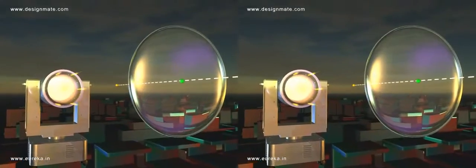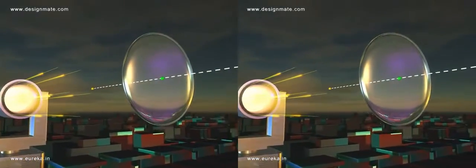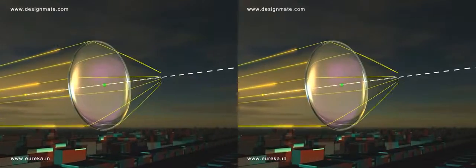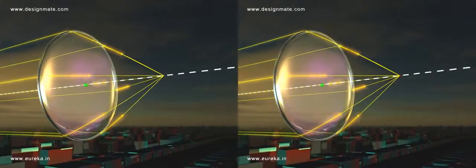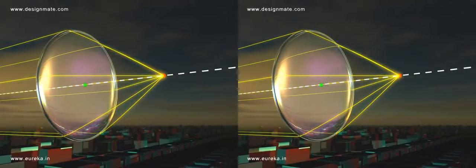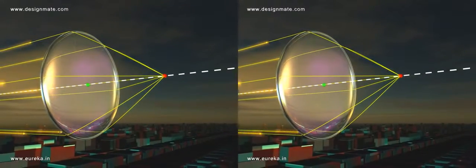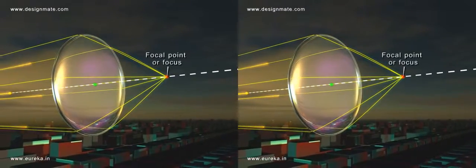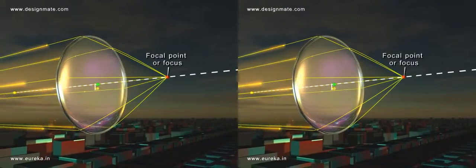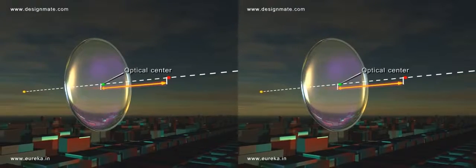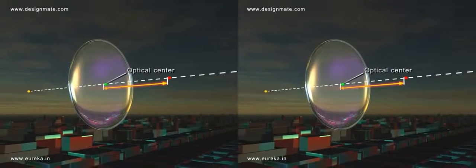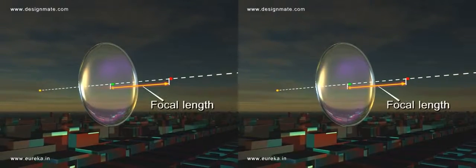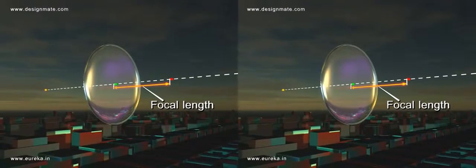Light rays parallel to the principal axis and incident on one side of the lens undergo refraction and converge at a point on the principal axis on the other side. This point is called the focal point or focus of the lens. The distance from the optical center of the lens to the focal point is called the focal length of the lens.